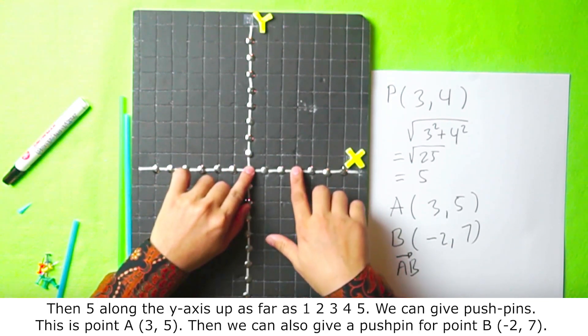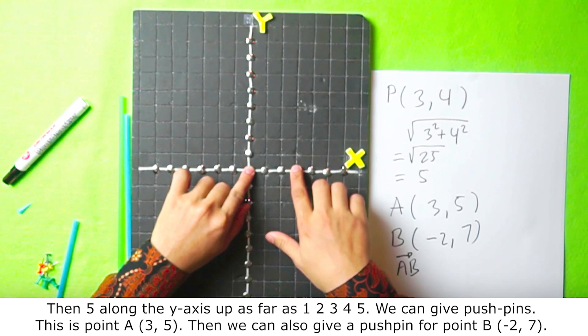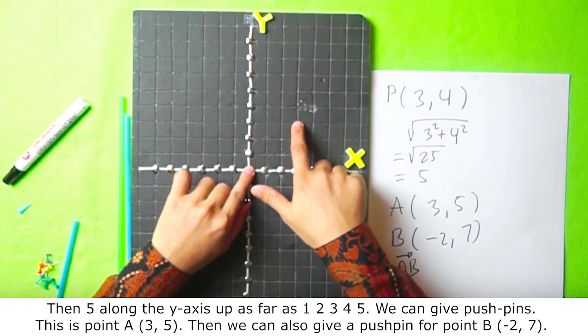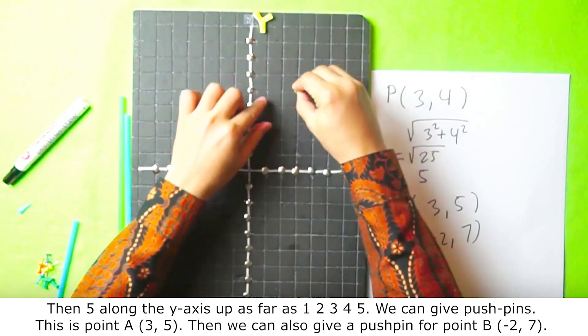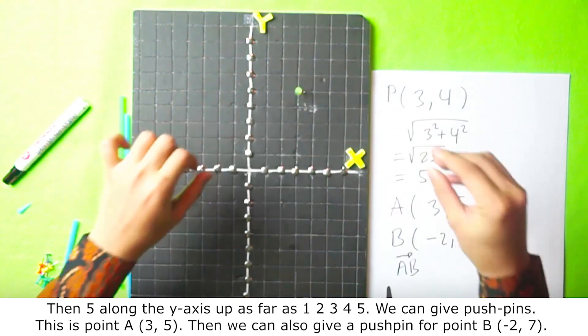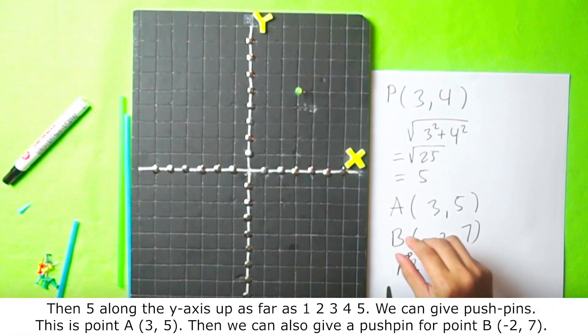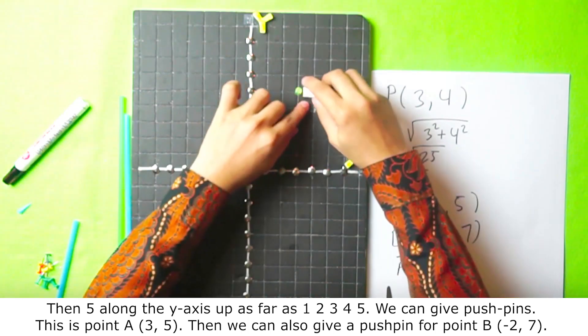And then 5 along the y-axis up as far as 1, 2, 3, 4, 5. We can give pushpins. This is point A, 3, 5. Then we can also give a pushpin for point B, negative 2, 7.